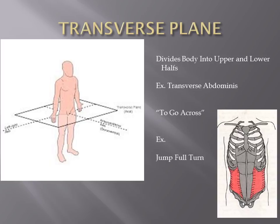The transverse abdominus is a great example of why we use body references. It's the deep muscle in your abdomen that stabilizes the ribcage during jumps, bounding, and tumbling. It works synergistically — meaning along with other muscles — to keep you tight without moving. The word 'transverse' means to go across, and the transverse plane goes across the body. You'll start picking up on these commonalities and putting everything together.